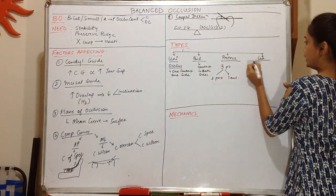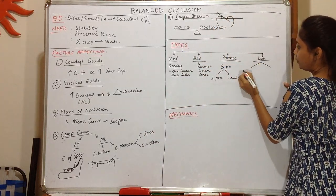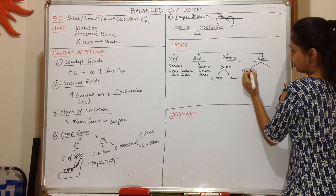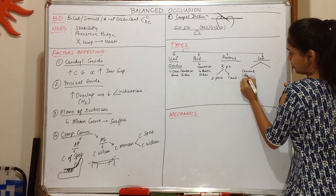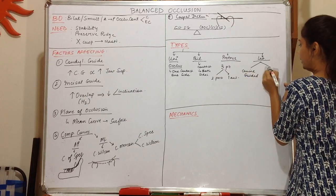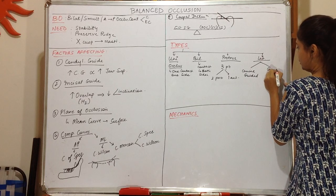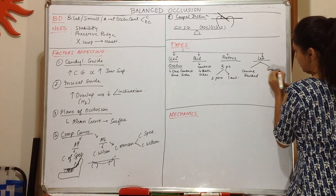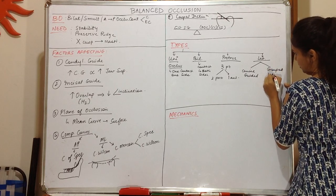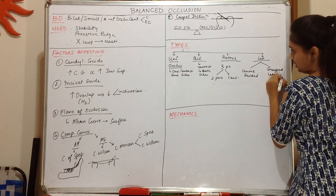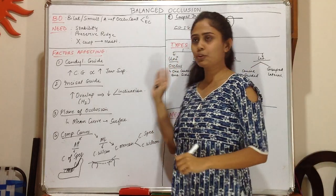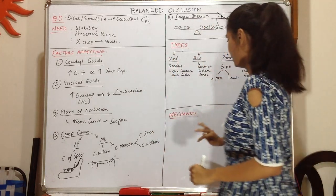The next type is lateral occlusion, which is divided into canine-guided and group lateral. This is just an overview of the types of balanced occlusion.